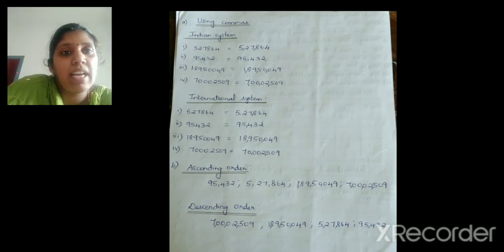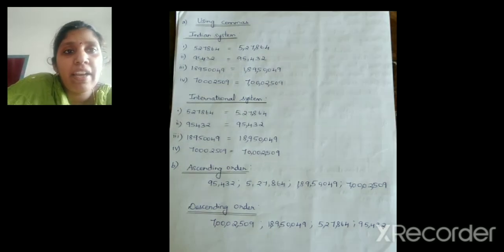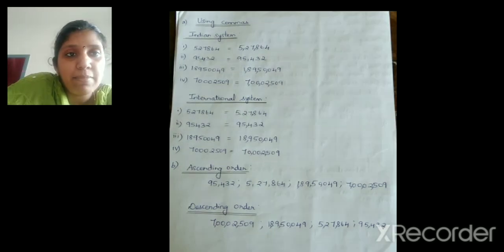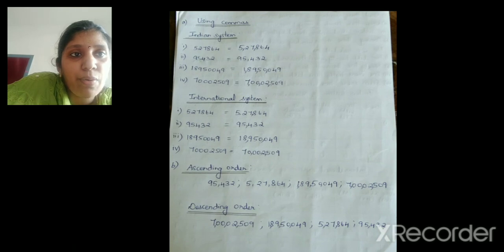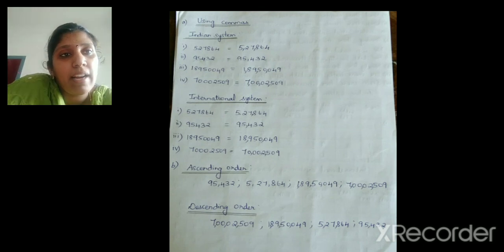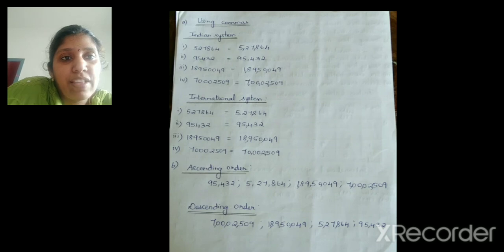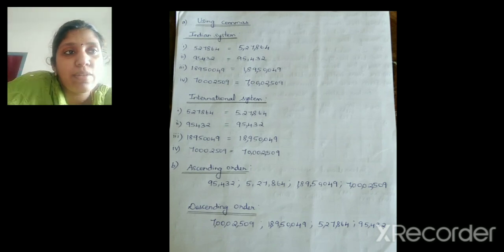Now we arrange them in ascending and descending order. Ascending order — smallest to greatest: 95,432, then 5,27,864, then 1 crore 89,50,049, and then 7 crore 2,509. Descending order — write in reverse: 7 crore 2,509, then 1 crore 89,50,049, then 5,27,864, and 95,432.